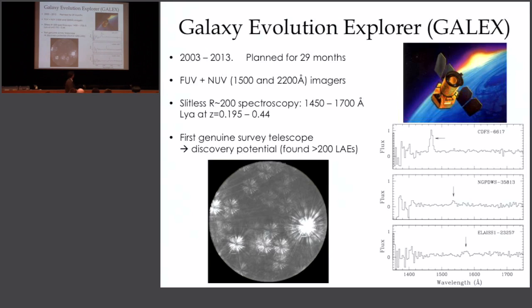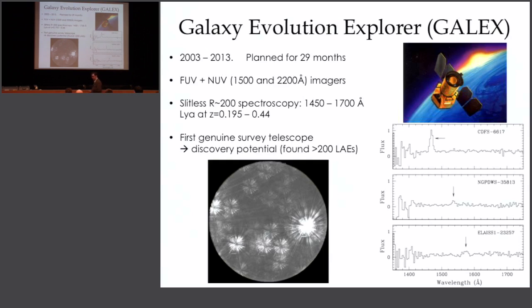Here are some examples from GALEX. GALEX had a 50-centimetre mirror — not so big, perhaps — but it flew for 10 years, planned to fly for only about two and a half. It had imaging cameras mainly; GALEX is known mainly as an imaging telescope. It did all-sky surveys of various tiers of the wedding cake, with channels at 1,500 Ångström in the far-UV and 2,200 Ångström in what we'd call the near-UV. But it was also capable of doing slitless spectroscopy with similar resolution to the previous telescopes — resolving power of about 200.